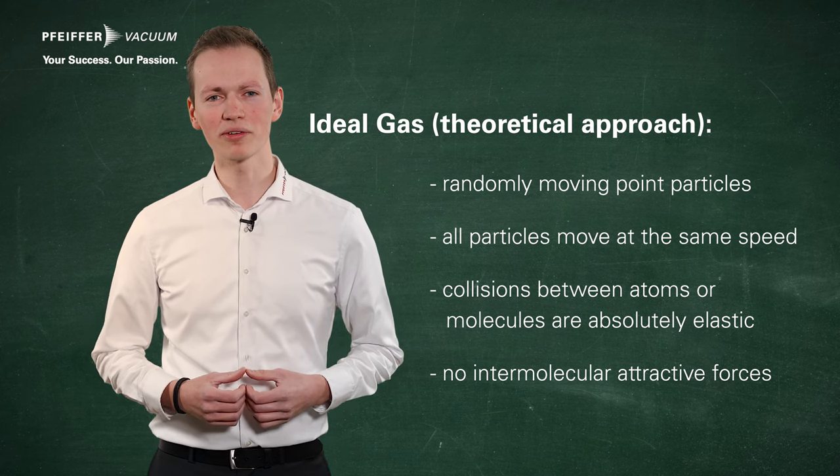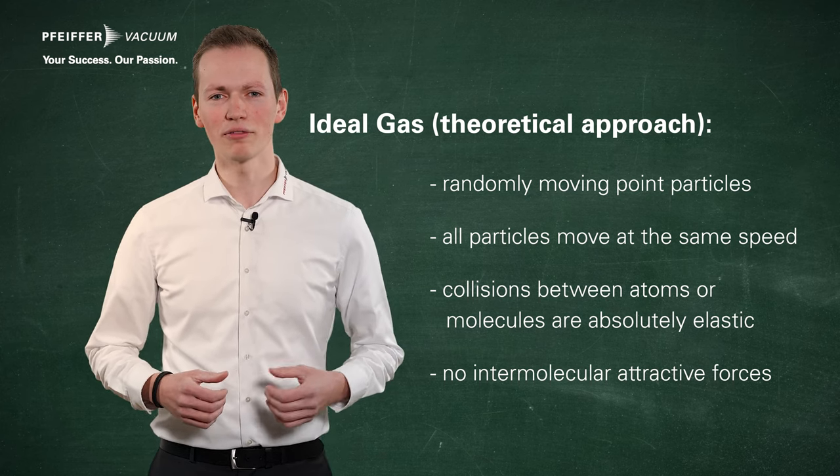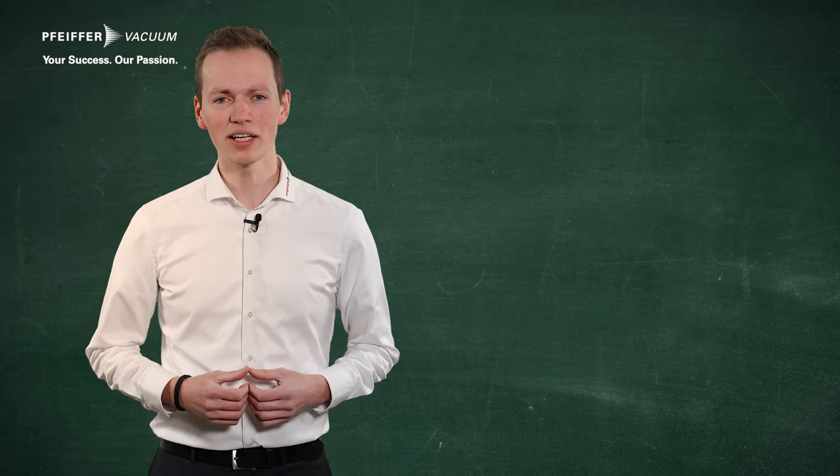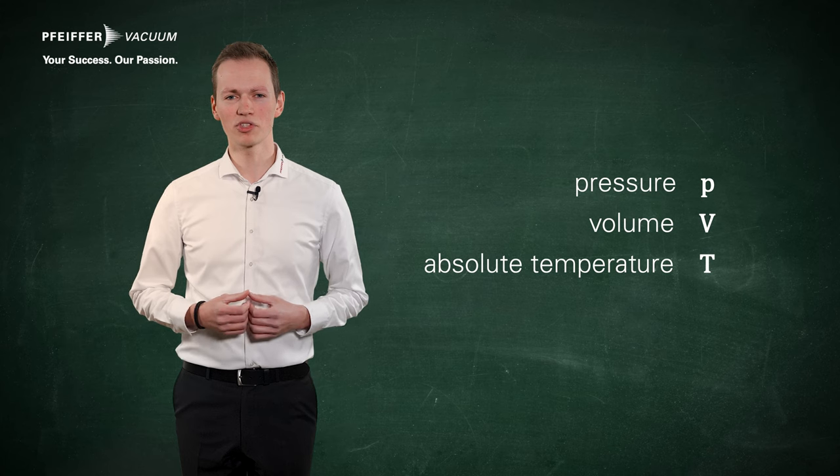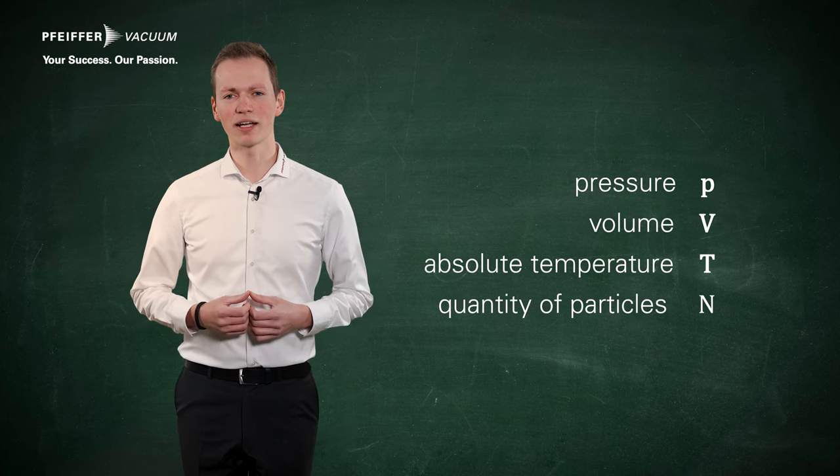When we are talking about the thermal state variables of an ideal gas, we basically mean the pressure p, the volume V, the absolute temperature T, and the number of particles N.